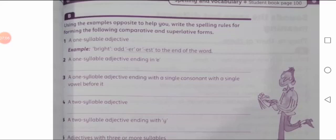How many times our tongue moves in our mouth to say any word — that is noticeable and is called a syllable. So for a one-syllable adjective, the example given is 'bright.' Add ER for comparative and EST for superlative to the end of the word. You have to write the comparative and superlative degree of 'bright' here.